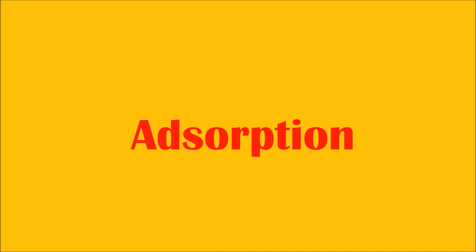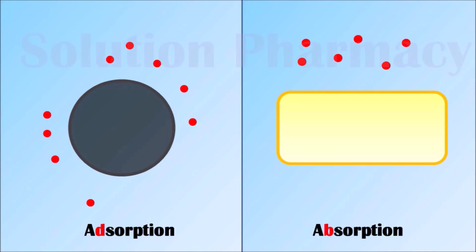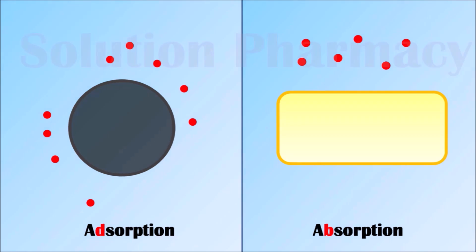First, let's understand adsorption. Adsorption means when the particles of one substance stick to the surface of another substance. The particles do not enter inside the other substance — they remain on its surface. Adsorption occurs when ions, atoms, or molecules of any gas, liquid, or dissolved solid adhere to the surface of a solid substance. It is a surface phenomenon.